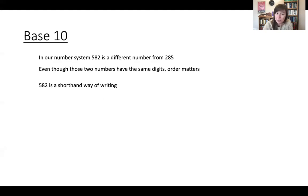In fact, a number like 582 is a shorthand way of writing this: 5 times 100 plus 8 times 10 plus 2 times 1. And the reason we say our number system is base 10 is because each of these places, like the position in the number, like the position of a digit in the number, tells you what power of 10 you're multiplying it by.